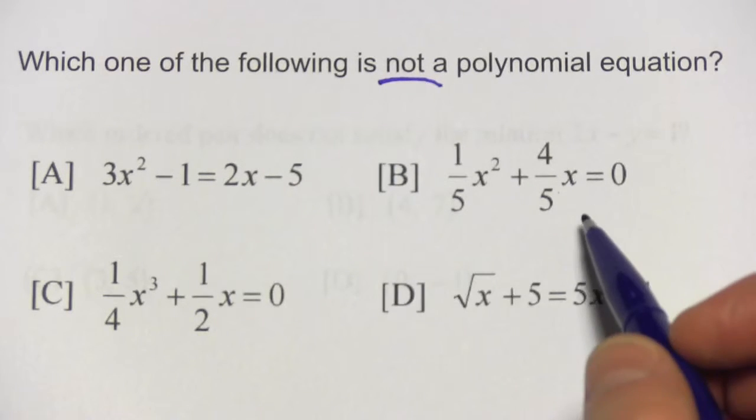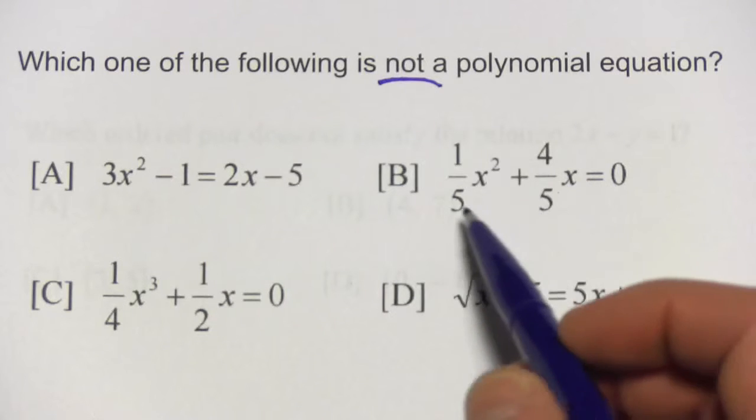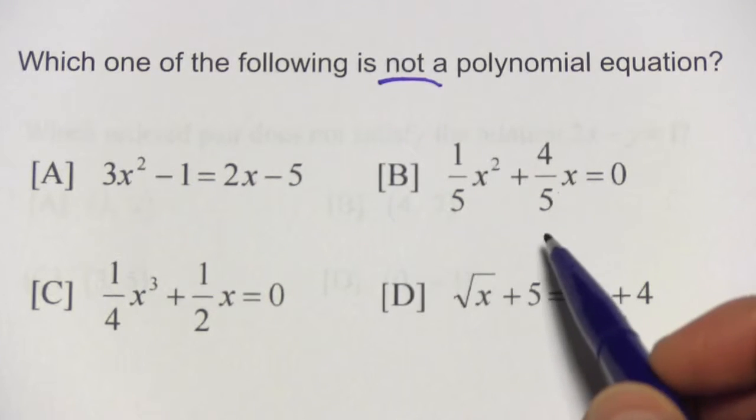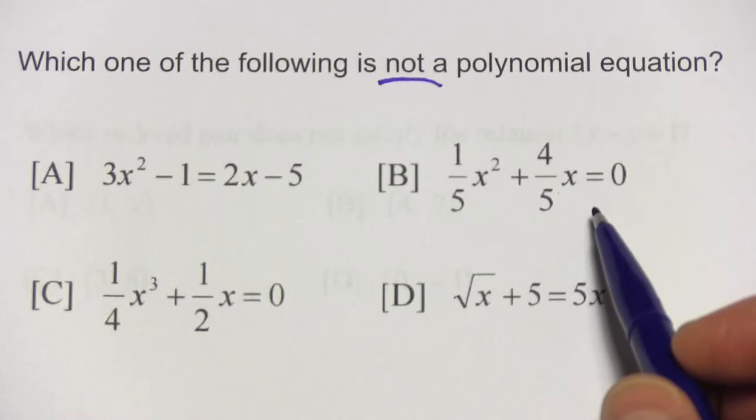In b, we've got something similar going on. The only thing different is we've got fractional coefficients, the numbers multiplied by the powers of x, but that's fine. That's still a polynomial equation.